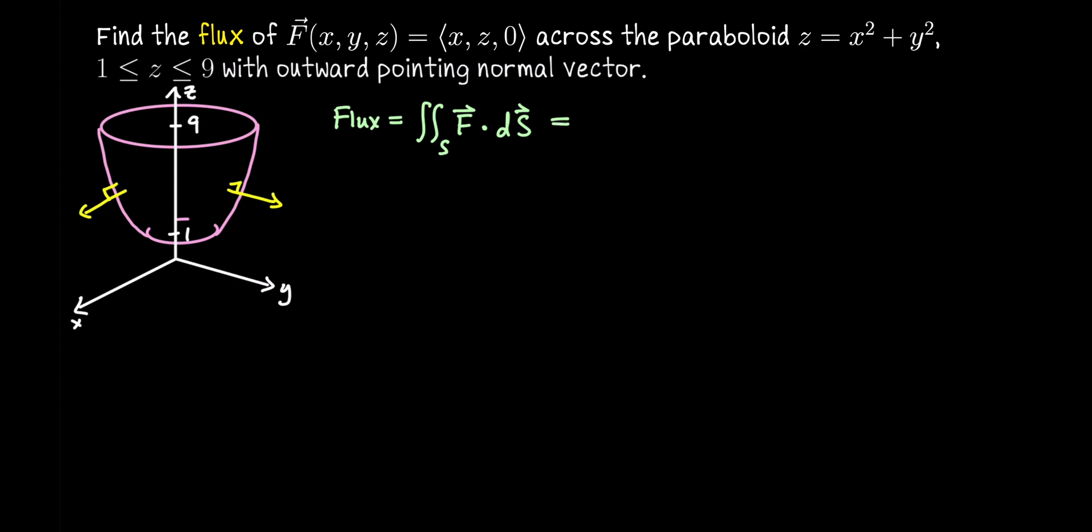So a computational form, we can say that if we have some parametrization for our surface, where D is the domain for the parameters, say u and v, then we can evaluate this flux integral by doing F(r(u,v)) - so we plug our parametrization into our vector field - and then dot that with r_u cross r_v, where we want that cross product to be oriented consistently with our surface's description. And then the differentials, which I'll write as du dv.